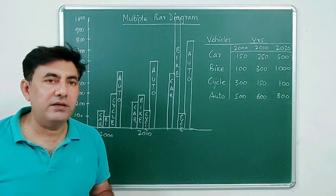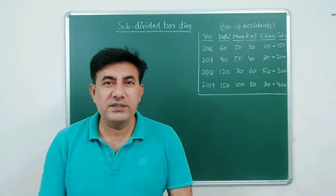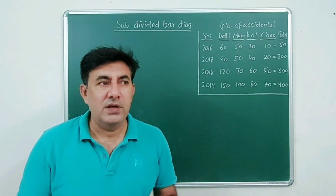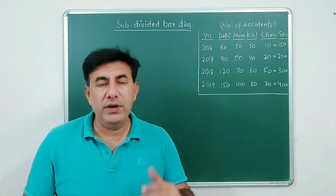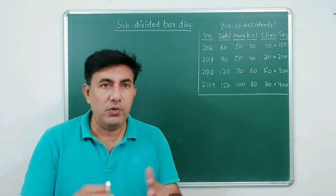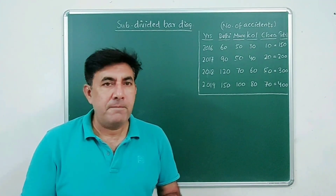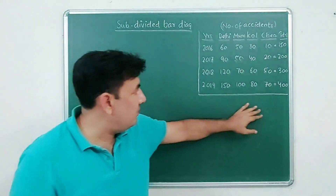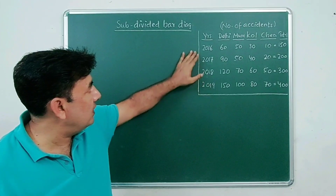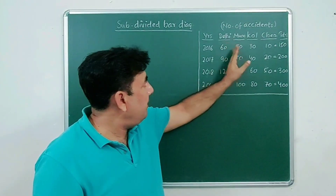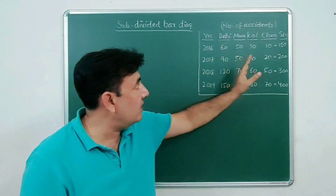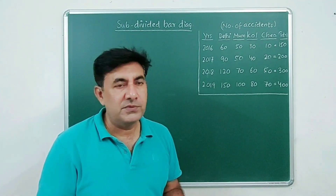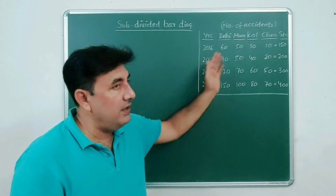The third type of bar diagram is the subdivided bar diagram. This is a new type at school level. The question gives years 2016, 2017, 2018, 2019, and four metro cities in India: Delhi, Mumbai, Kolkata, and Chennai. The number of accidents in each city for each year is provided.